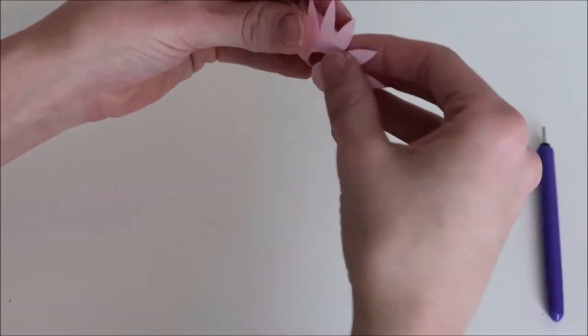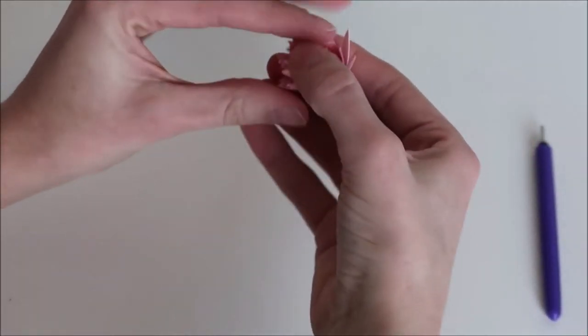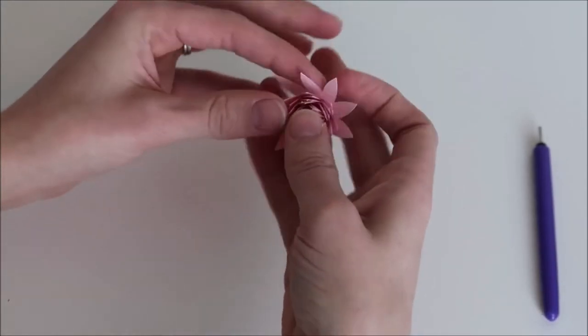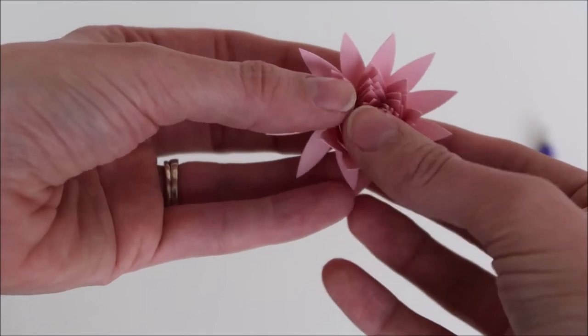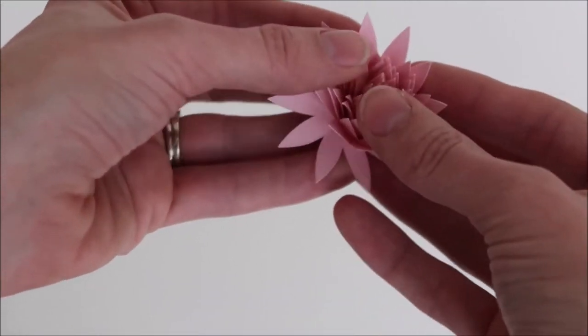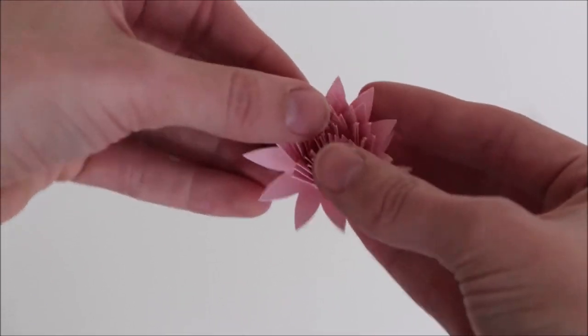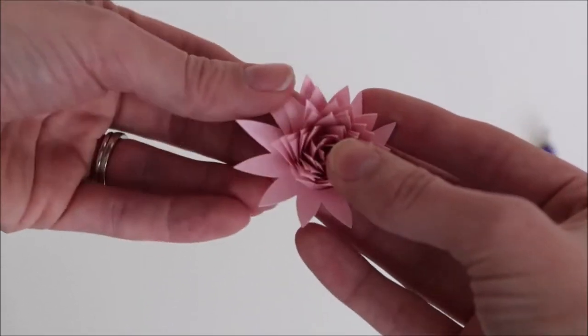When I get to the end I just pop out my quilling tool. Then I like to kind of push against the pieces with my fingers just to try to make it look a little less stiff and form it a little bit more into a flower. You kind of have to play around with it until you get to where you like how it looks.